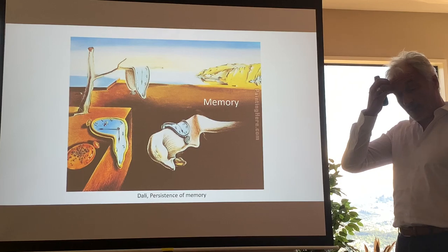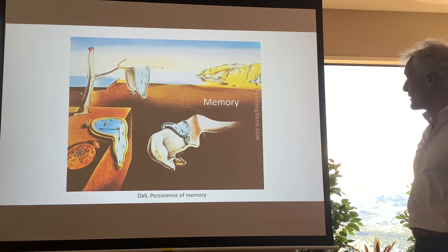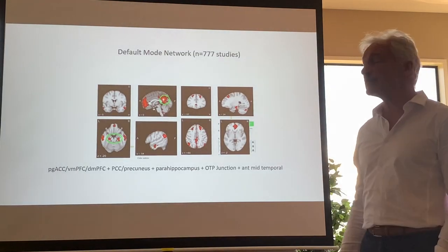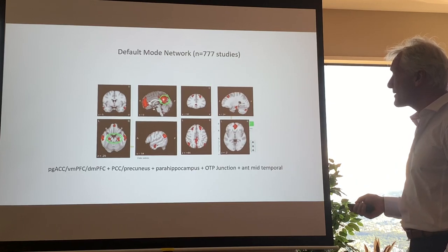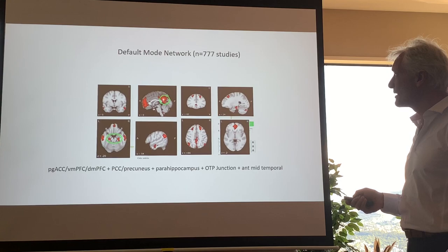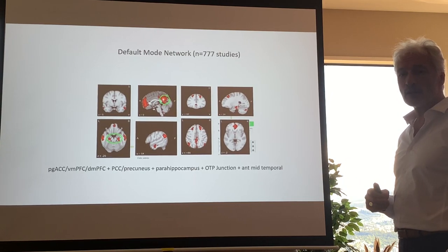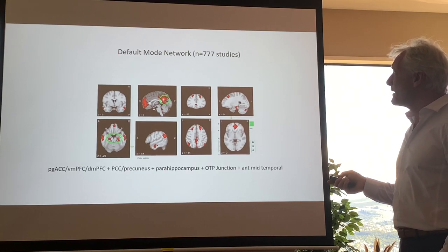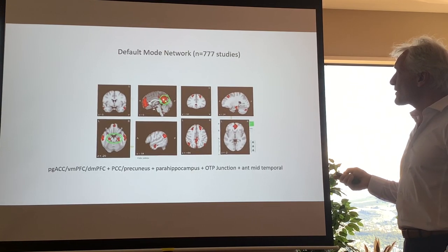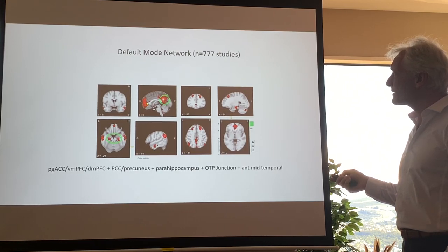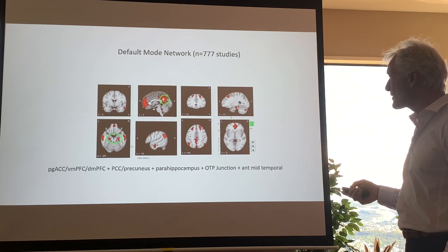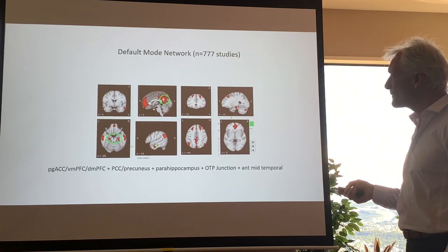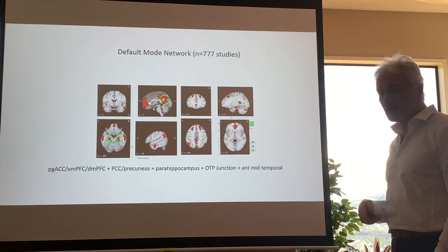Today we will continue where we left off, talking about memory. Memory is closely related to the default mode network. This is a meta-analysis by a neuroscientist of 770 studies looking at the default mode network, which is active when you're mind-wandering, thinking about the past, or reflecting about the future. The default mode consists of the PCC, pre-genual anterior cingulate extending into the ventromedial prefrontal cortex, but also the temporal parietal junction, the anterior mid-temporal area, and importantly, the hippocampus and parahippocampal area.